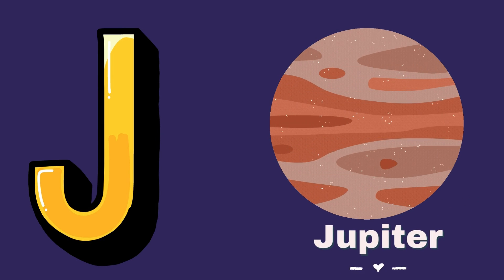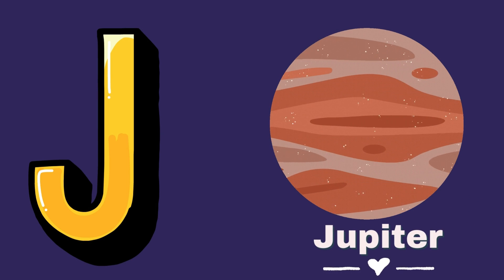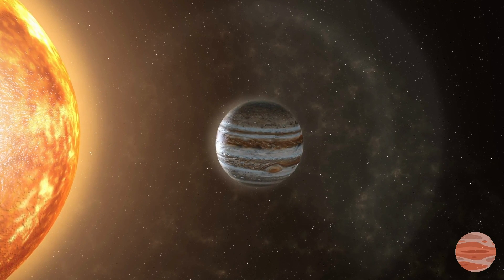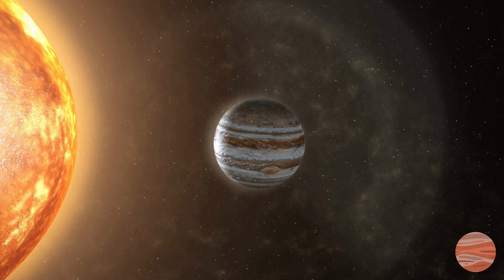J for Jupiter. Jupiter is the solar system's biggest planet. With its massive size, it steals the glow.